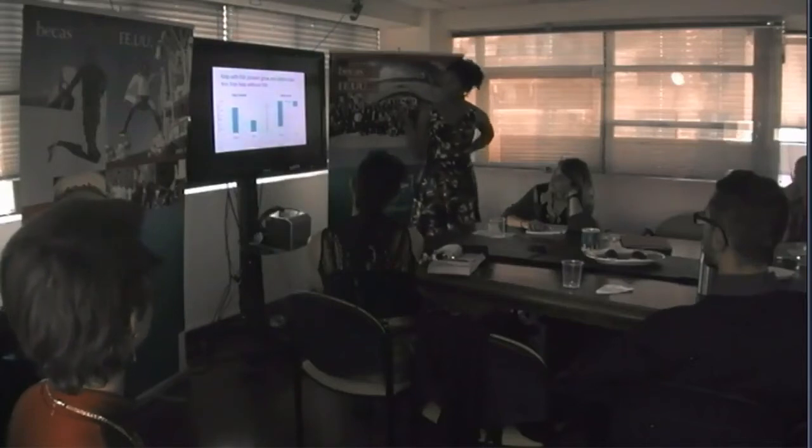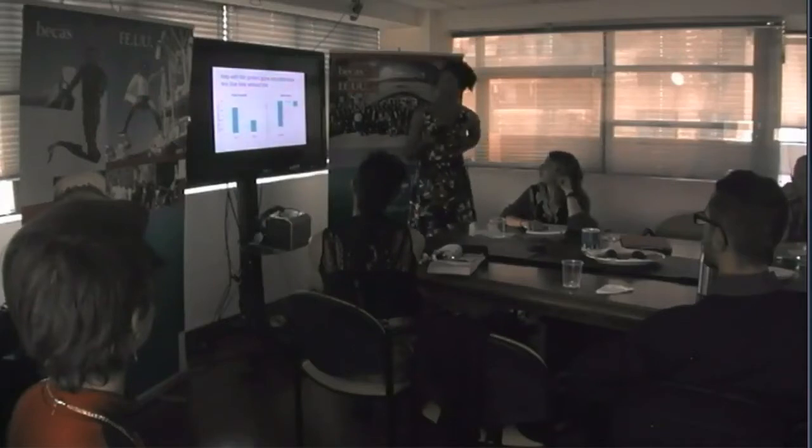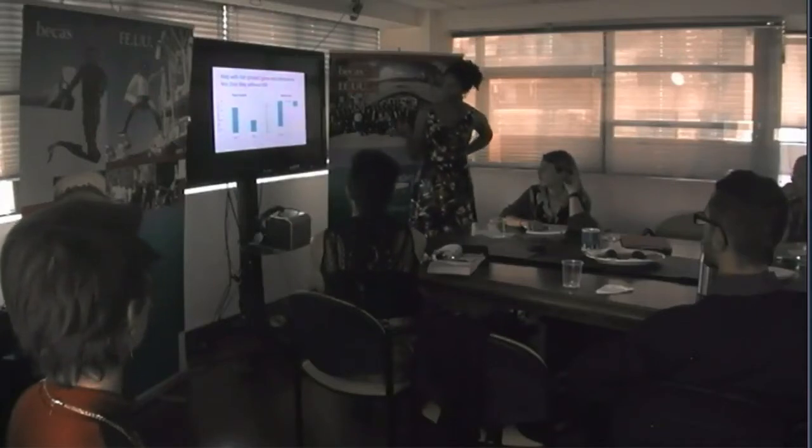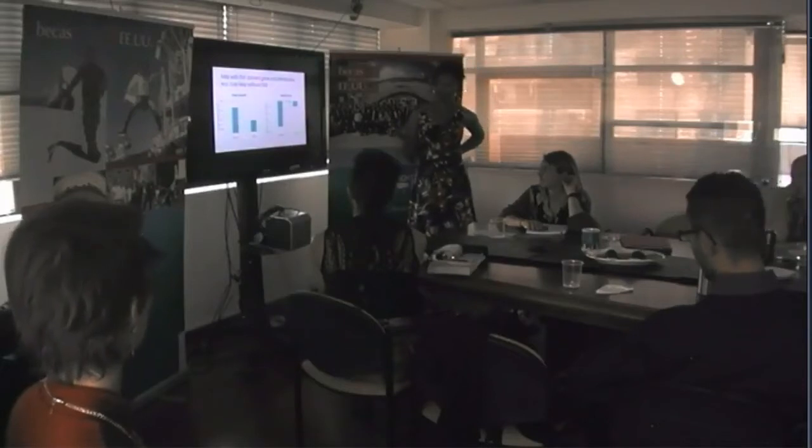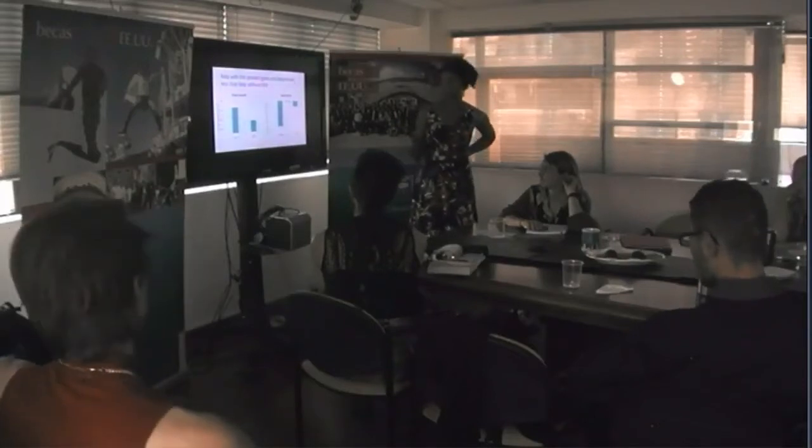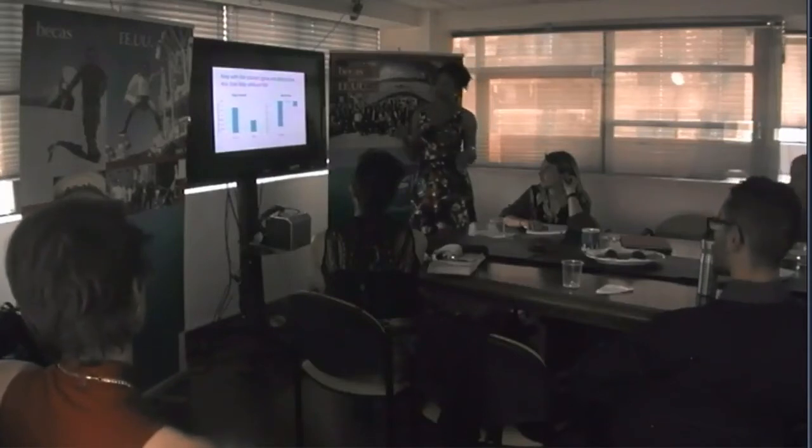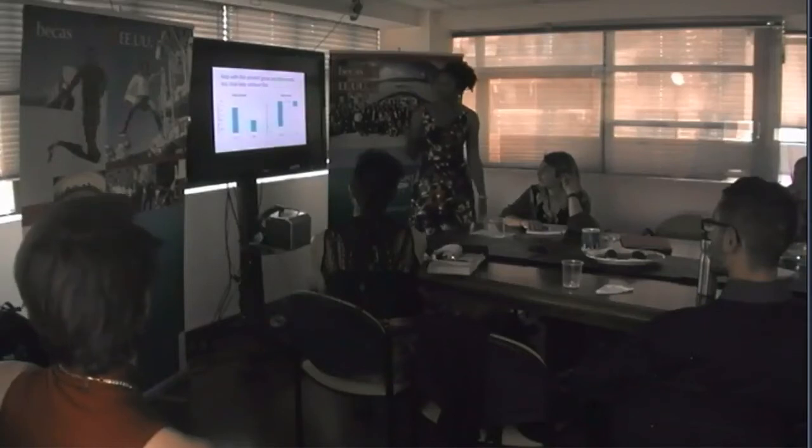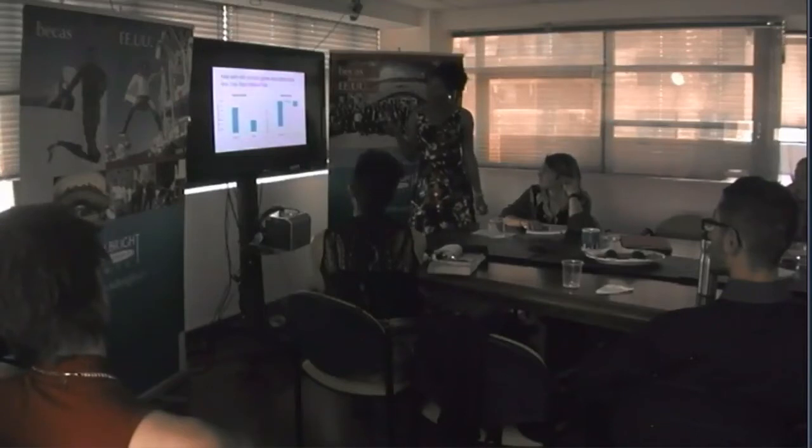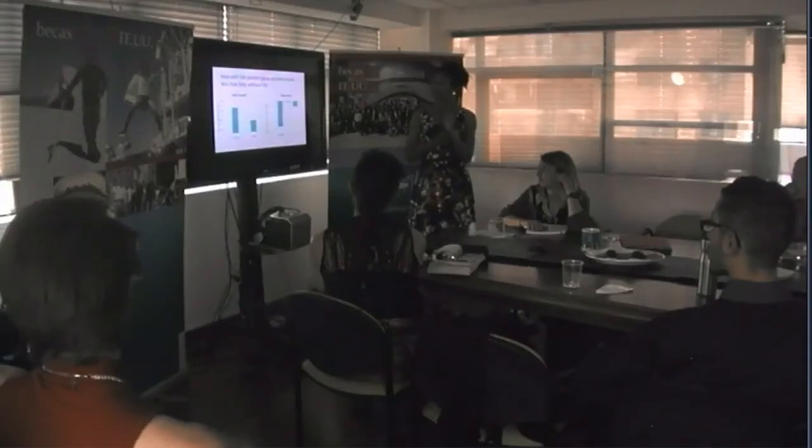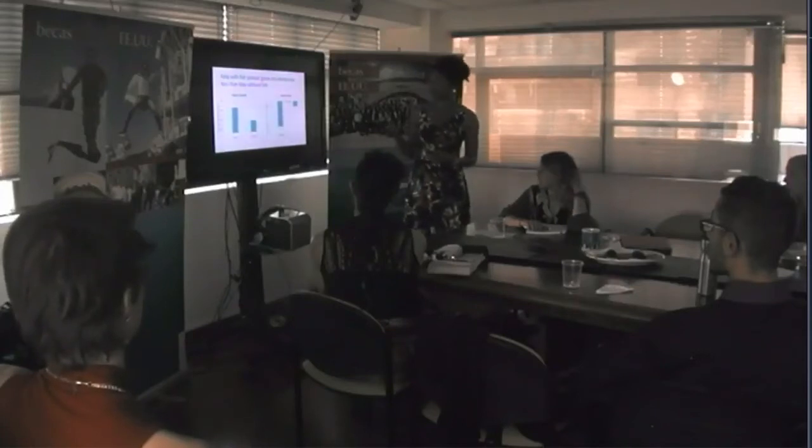And so we see that kelp growing with fish presence tend to grow and deteriorate less than kelp without fish. So on this left graph is the amount of growth after 10 days, and it was pretty minimal growth, just between about 1 to 3 millimeters, and it was slightly higher in the control group, actually. But kelp decay was substantially less in the fish treatment. So kelp with fish, where perhaps their growth and decay was kind of slowed by having fish present.